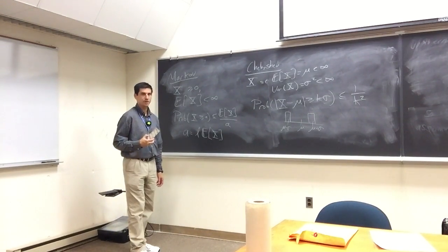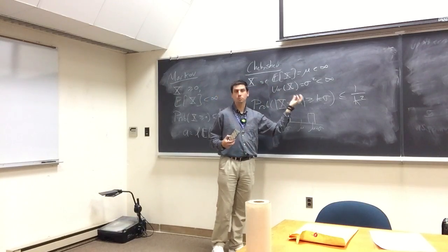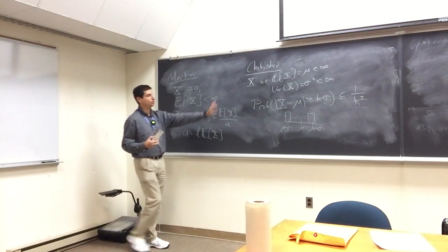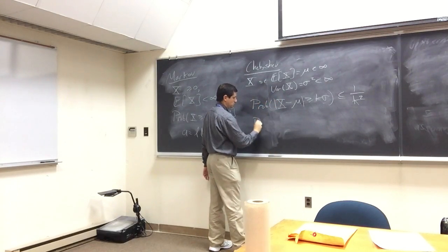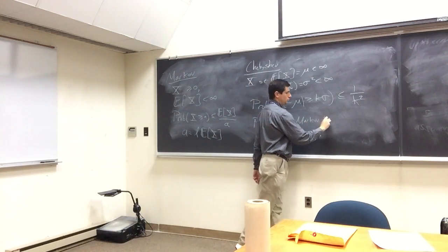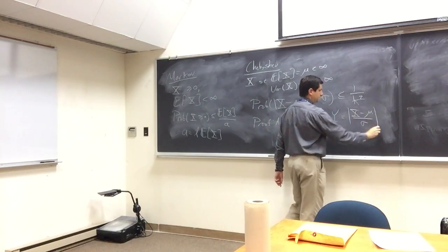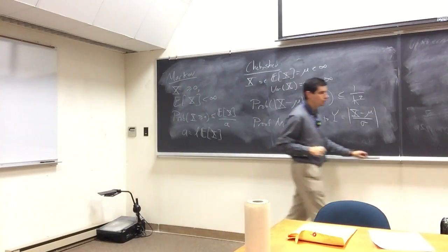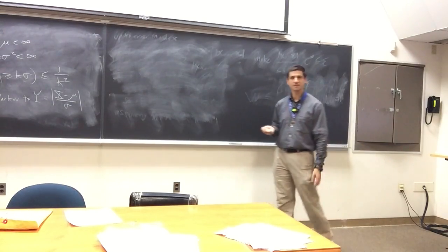Chebyshev assumes a lot more than Markov. Markov assumes only a non-negative random variable with finite mean; here we also assume something about the variance. There are two proofs. One proof is to apply Markov to y = (x − mu)^2 / sigma^2, which has finite mean. I'll go through the brute force proof — it's essentially the same as Markov's proof, and lets me emphasize the key idea again.